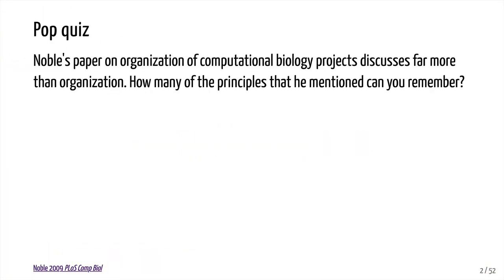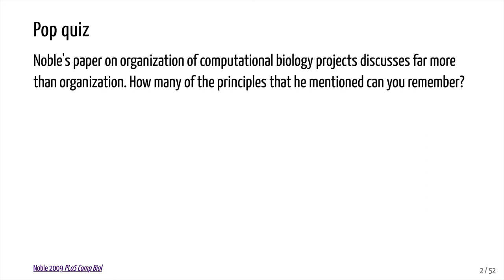Before we start talking about Make, I want to give you a pop quiz that will jog your memory from a few sessions back and help prime what we're going to be talking about today. Noble's paper on organization of computational biology projects was something we've discussed a few times in previous sessions. I have a bulleted list of about six different things that Noble points out as being really important for organizing and going through a project. How many of those can you remember? Pause the video and scratch your head, maybe look back through the previous notes, and then come back once you've got your list.